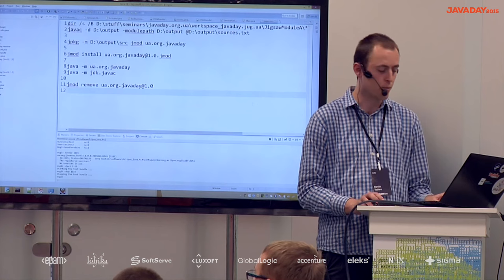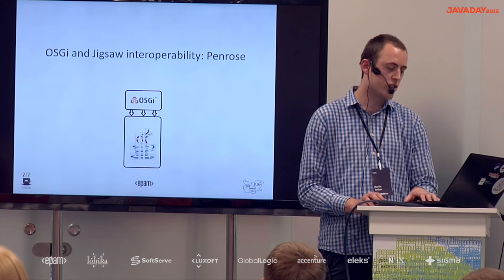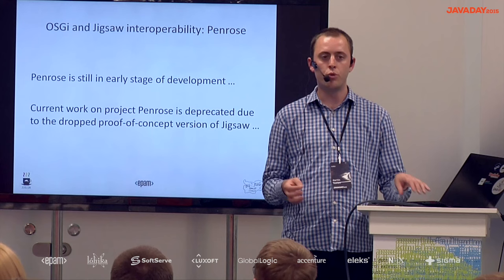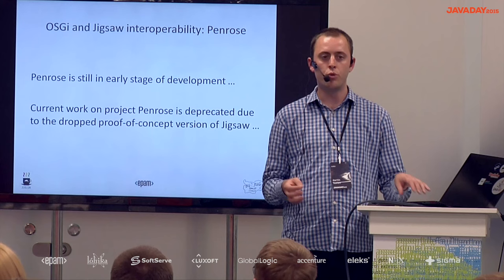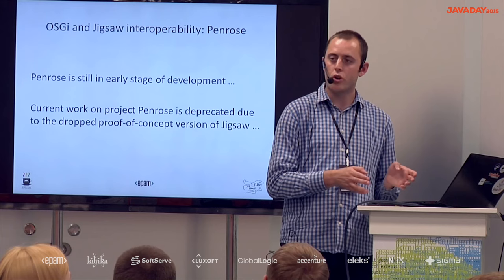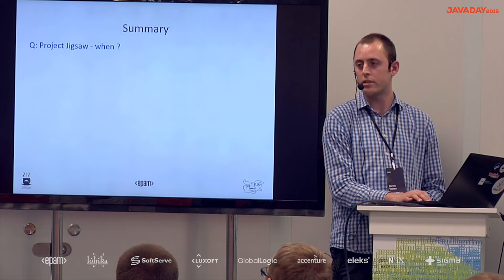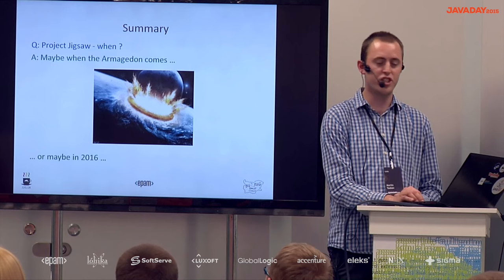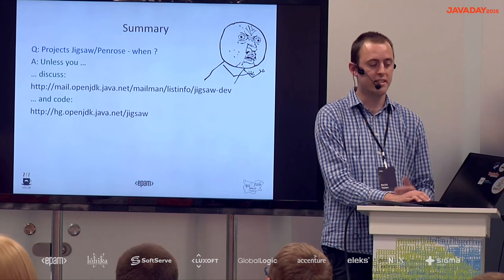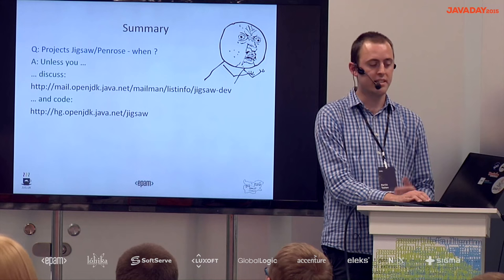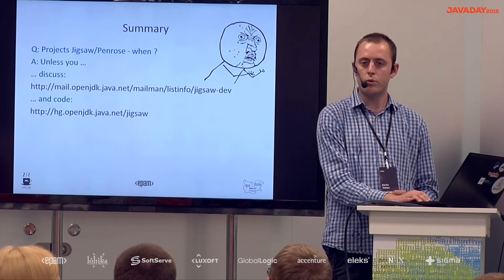In short, that was Jigsaw. As a final note, there is an effort called Project Penrose to provide interoperability between Project Jigsaw and OSGI, allowing you to build the same module as either a Jigsaw module or an OSGI bundle and provide the same metadata for both. Project Penrose is currently under active development but is suspended until Project Jigsaw is further developed. When can we expect Project Jigsaw? Maybe never, maybe in 2016 — it depends on the progress defining the module metadata. You can follow the mailing lists, check out the OpenJDK source code, and contribute.